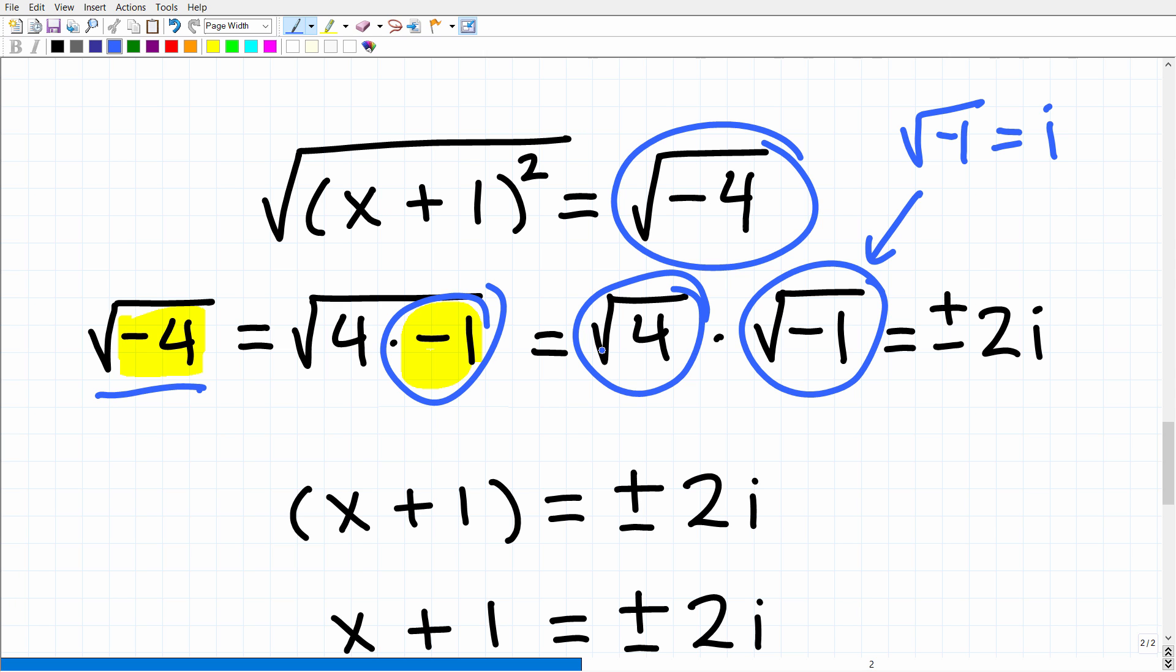We're going to take both roots, both positive and negative, of the square root of 4. So that's going to give us positive and negative 2i because we are dealing with a quadratic equation. By the fundamental theorem of algebra, we definitely need two solutions. So this is how we get to our imaginary component or imaginary part of this answer. Let's go ahead and finish this up.